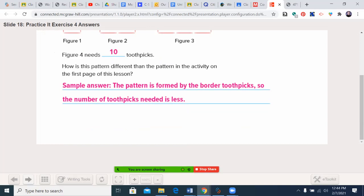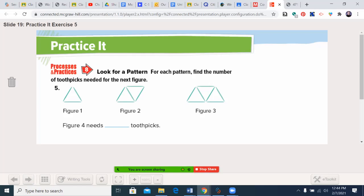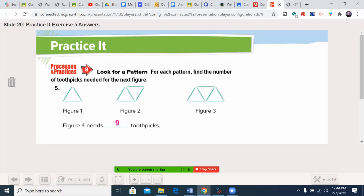Number five, another practice. How many toothpicks will be needed in figure four? Go ahead and pause the video and come back when you're ready. You may pause the video now. Welcome back. Let's see how you did. The answer is nine toothpicks. We went three, five, seven. You start seeing we're going up by two. The next one is nine.